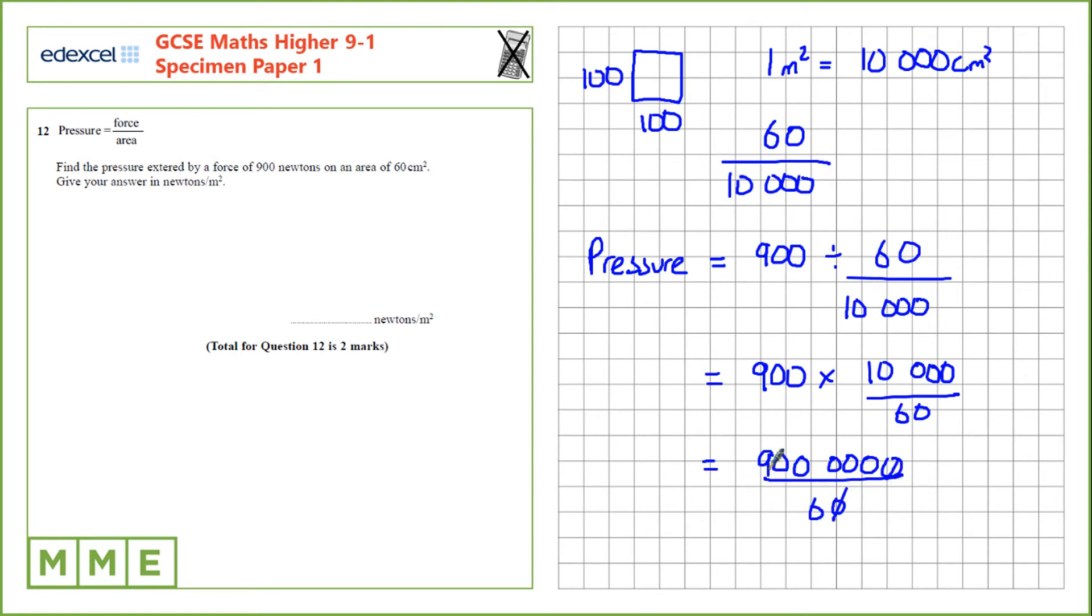We can cancel two of those zeros. 900,000 divided by 6 is 150,000.